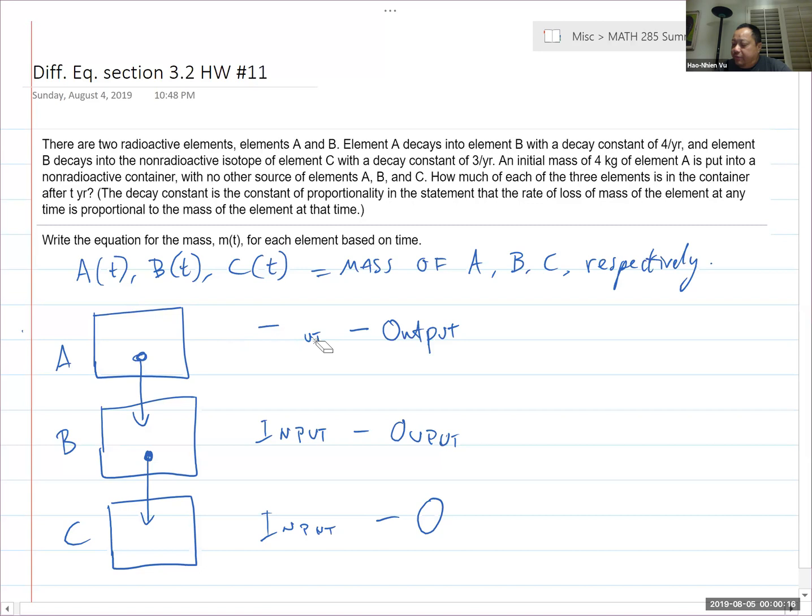All right, so the rate of change of A doesn't have any input. So I'm going to erase it. The rate of change of A, dA/dt, is going to be output only, is going to be minus K_A times the mass A. That's what they say about the constant of proportionality.